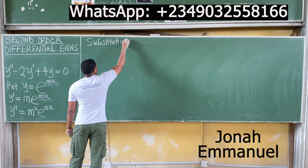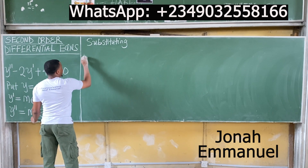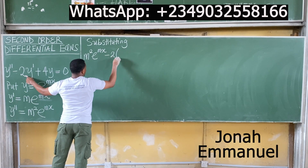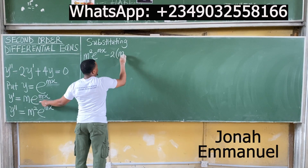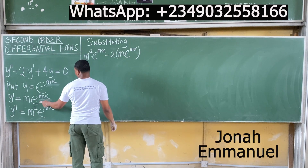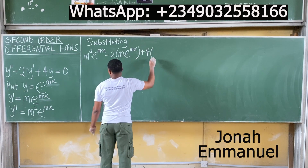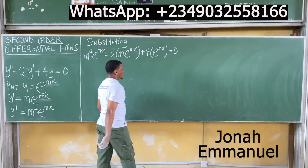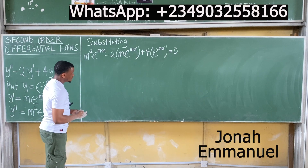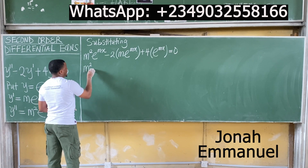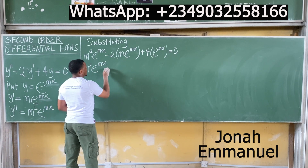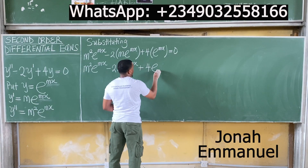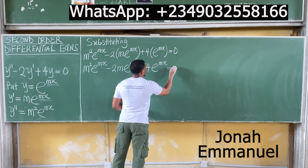Now substitute into the equation. We get: m²·e^(mx) minus 2·m·e^(mx) plus 4·e^(mx) equals zero. Expanding the brackets gives: m²e^(mx) − 2m·e^(mx) + 4e^(mx) = 0.